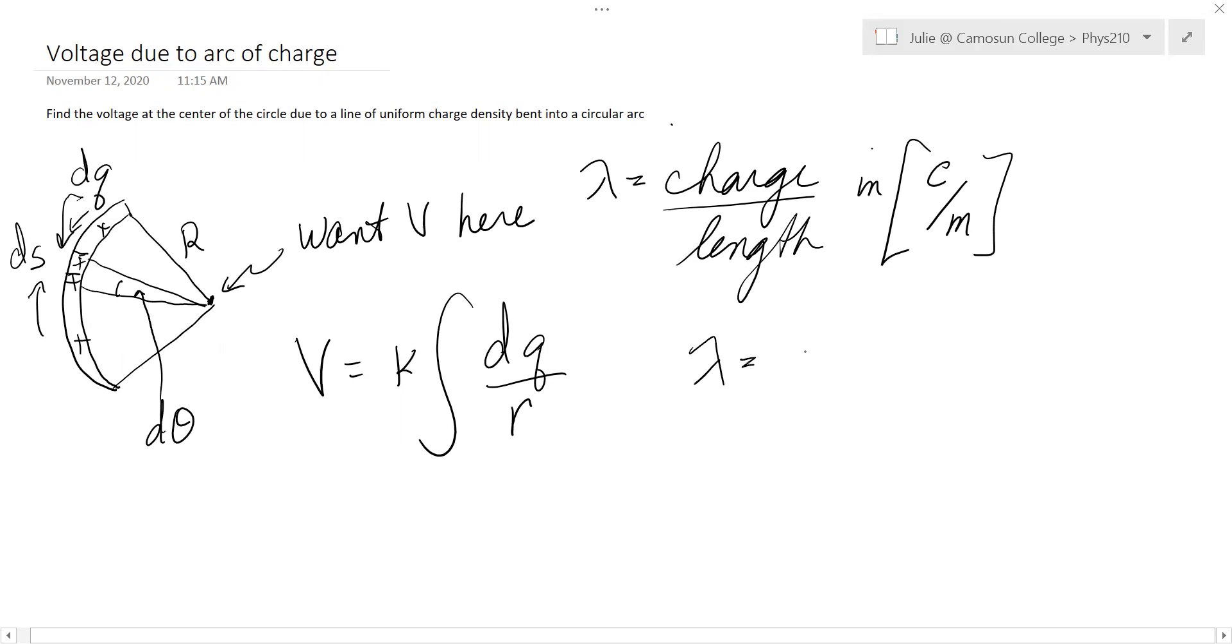So we can write lambda as the little bit of charge over the little bit of length, and so it's dq, and an arc length is r d theta.